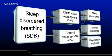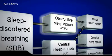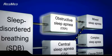To fully understand complex sleep apnea, it is helpful to be familiar with other types of sleep apnea. Obstructive sleep apnea, or OSA, is caused by repetitive upper airway obstruction during sleep. This type of sleep apnea is often recognized by the bed partner because of the snoring and gasps for air when the upper airway is obstructed.